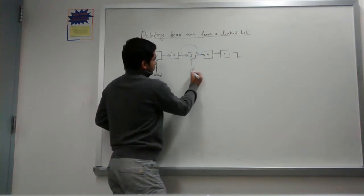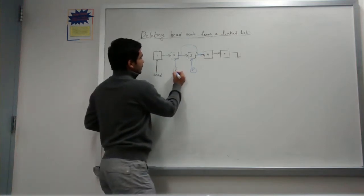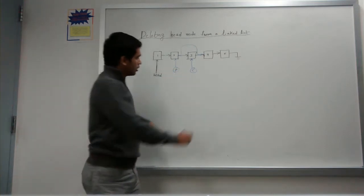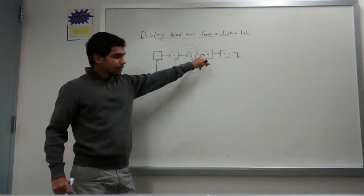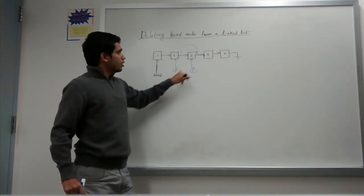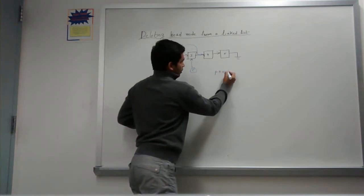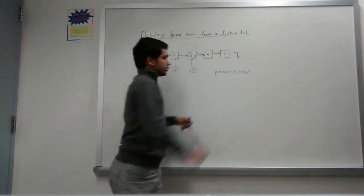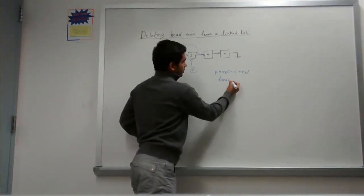Say there is a current pointer pointing to node 3 and there is a previous pointer pointing to the previous of my current node which is 2. So what you have to do is saying my previous is next should be my 4 and not 3. So how do you write it? Previous next is equal to c.next and you go and free c.